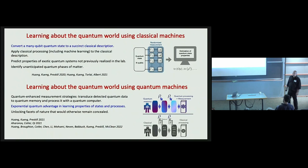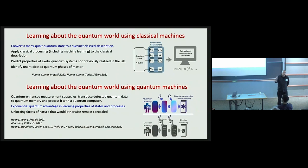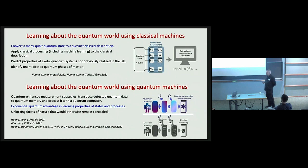With quantum machines we can go further. If we can transduce quantum data to a quantum memory and then process it with a quantum computer, then in some cases we can achieve an exponential advantage over classical processing of measurement data. That is, we can learn properties with exponentially fewer experiments — exponential in the system size — if we make use of quantum memory and processing, which can allow us to perceive aspects of nature that would otherwise be deeply hidden.